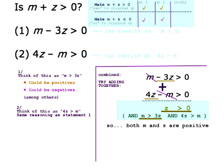Both m and z are positive, so m + z > 0 is guaranteed. You can check off the 'yes' box, and the 'no' box is impossible to check off. The two statements together are sufficient — the answer is C.